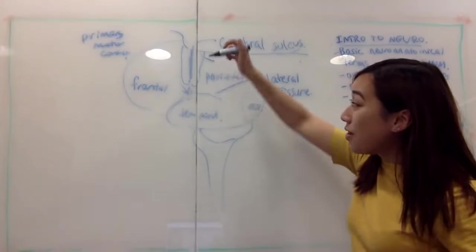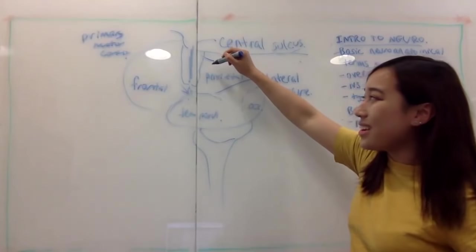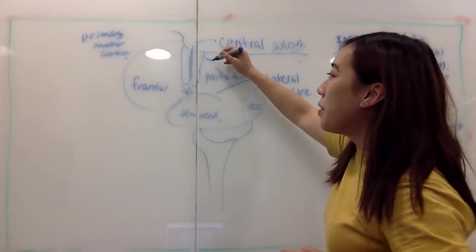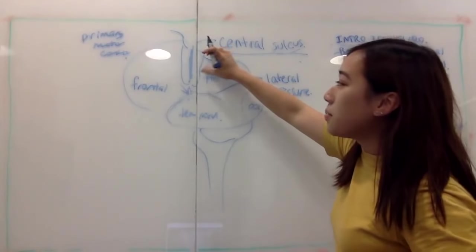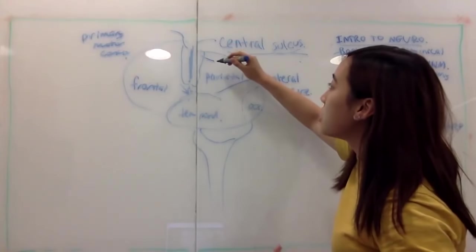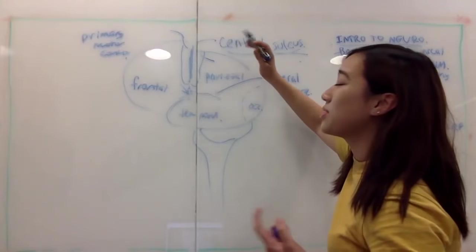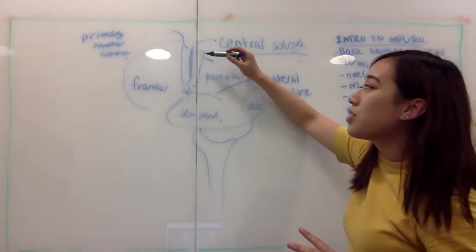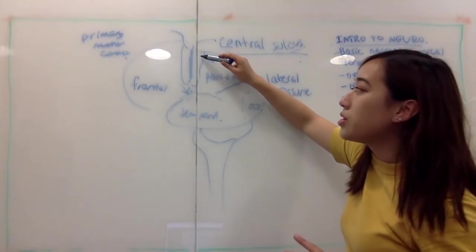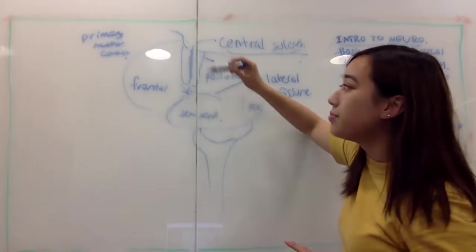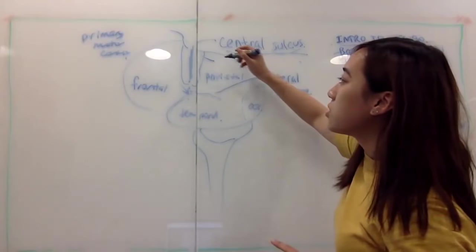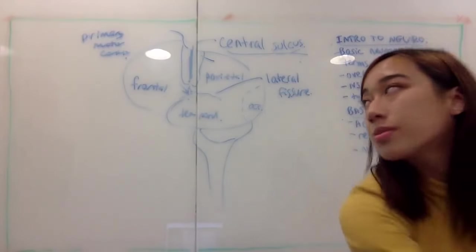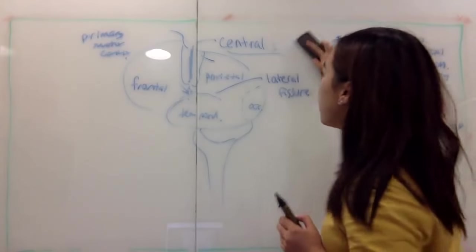The next bit is somatosensory. The postcentral gyrus — just behind the central sulcus — is going to be somatosensory function. It's also known as the primary somatosensory cortex. So the parietal lobe is also involved in somatosensation, which is critical for things like light touch and vibration.